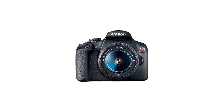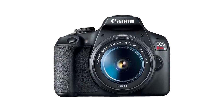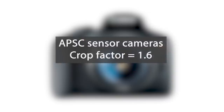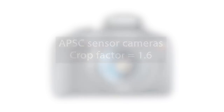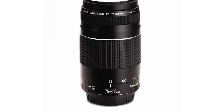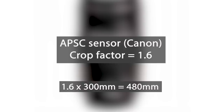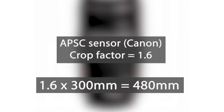For another example, let's consider a Canon T7 which has an APS-C sensor and a crop factor of 1.6. Add a telephoto lens set to a focal length of 300mm — the maximum — and you are now shooting at 480mm because of the crop factor. 1.6 times 300 equals 480.